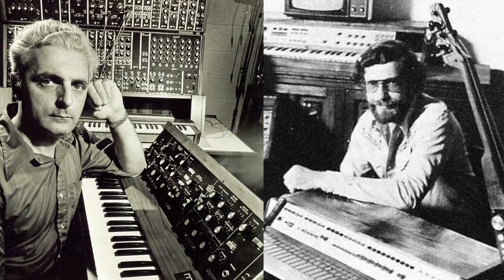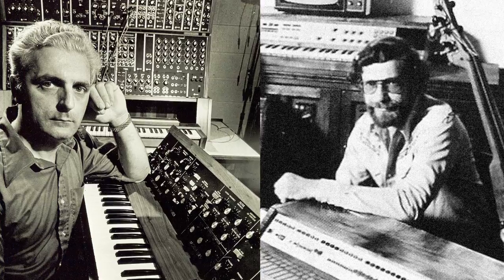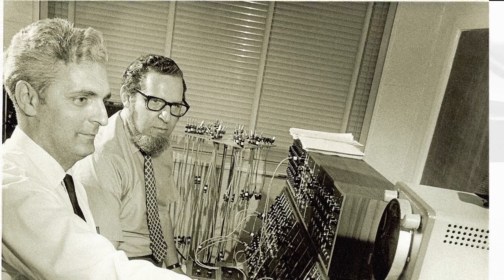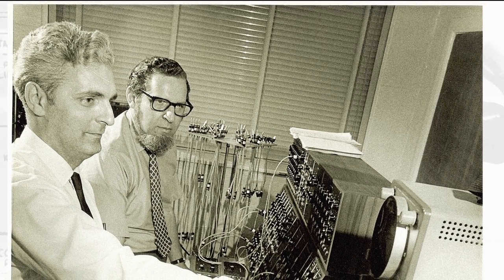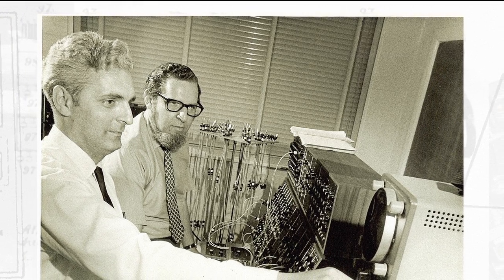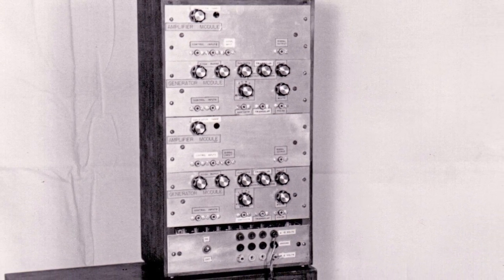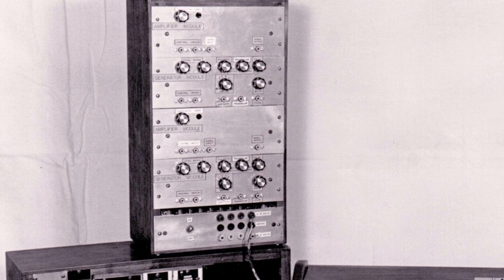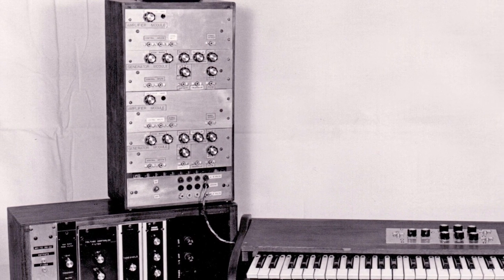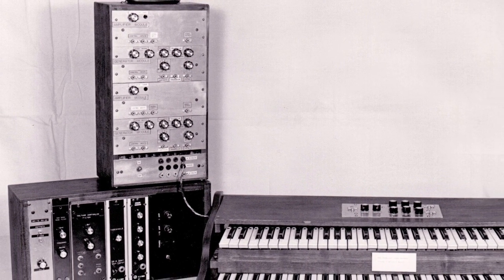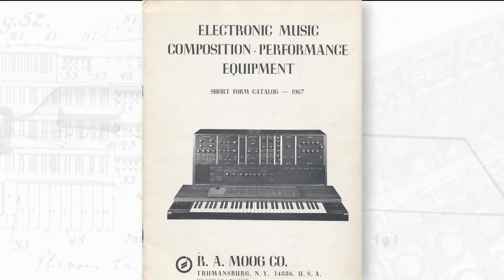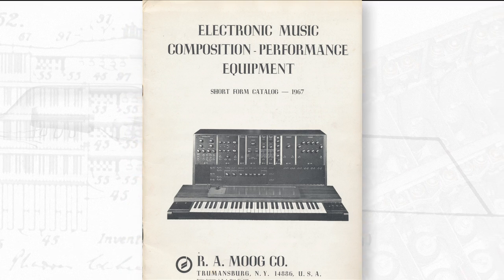Bob Moog and Donald Buchla employed the process of using voltage to control electronic music components in the creation of their respective synthesizers. In the case of Bob Moog, it was the ability to control and modulate the oscillator simply and easily that shocked and amazed jazz composer and collaborator Herb Deutsch. Bob's work demonstrated that voltage could be used to control any aspect of an electronic oscillator, filter, or amplifier. This control was what electronic music composers had been looking for for decades. With developments in transistors and voltage control, an entire electronic music studio could be contained in a comparatively small device and controlled completely. The modern synthesizer was born.